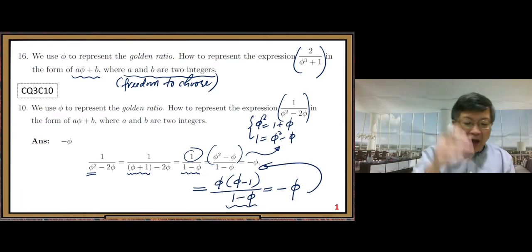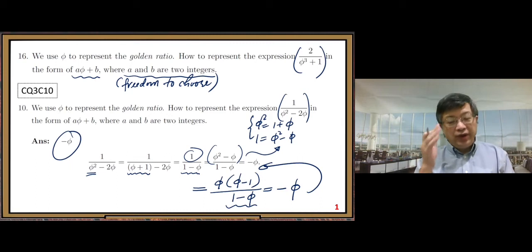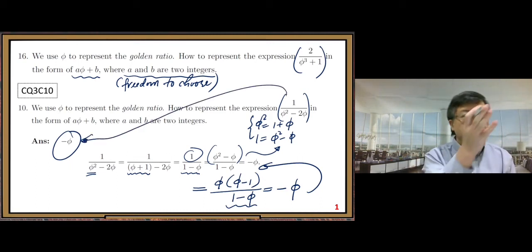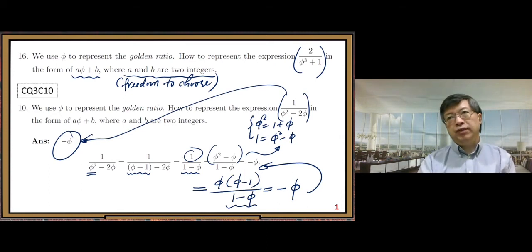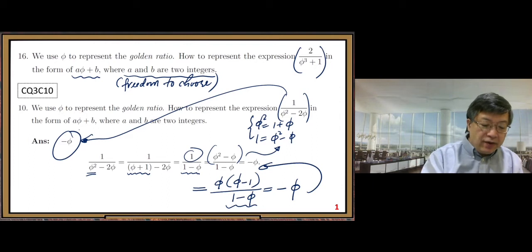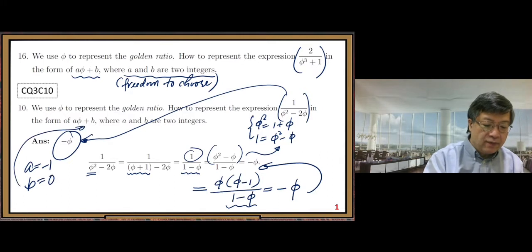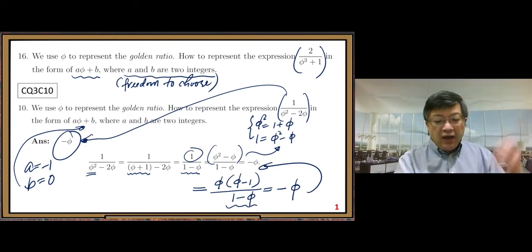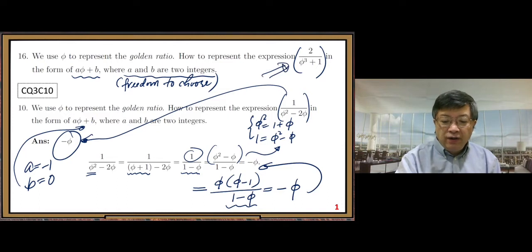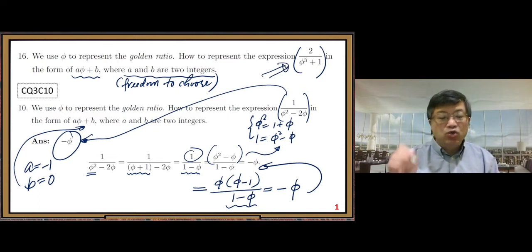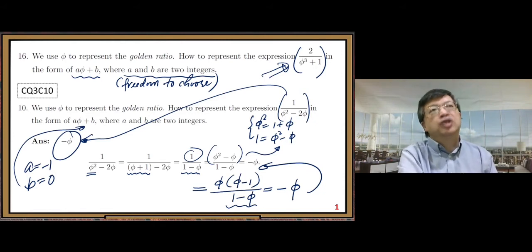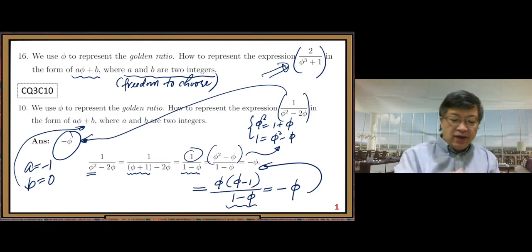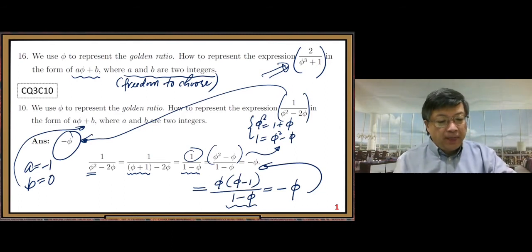So with that answer, finally, we reduce the fraction form to that linear polynomial form. So after we get this linear polynomial form, then we know a equals negative one, b equals zero. That corresponds to aφ plus b form. So that is the way I'd like you to do on this 2 over φ cubed plus 1, that fraction expression. All right. That's question number 16, the next question.